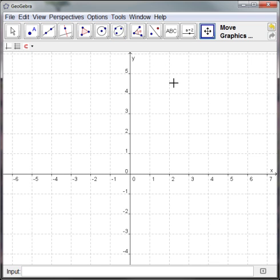First of all, to put a function, one way to do that is to put it into the input box. Let's say f at x is equal to x squared plus 2, and it plots that function for us.